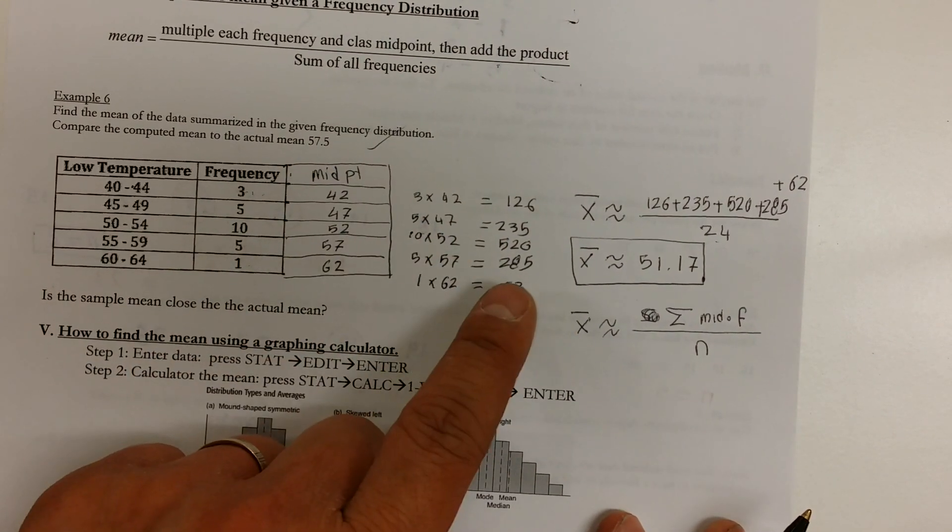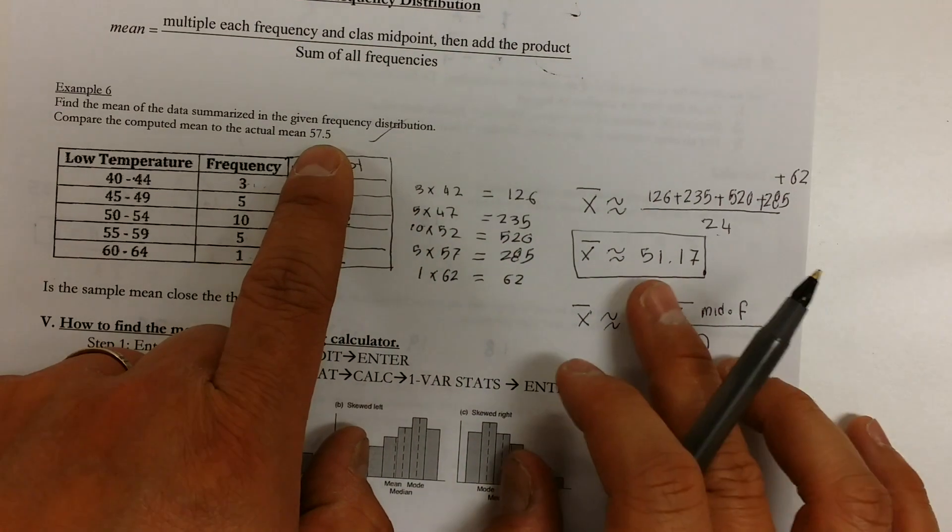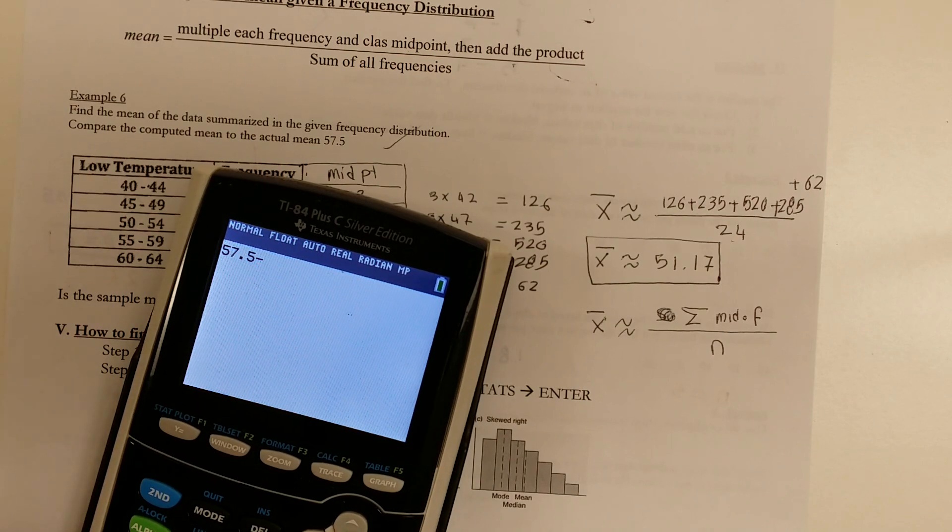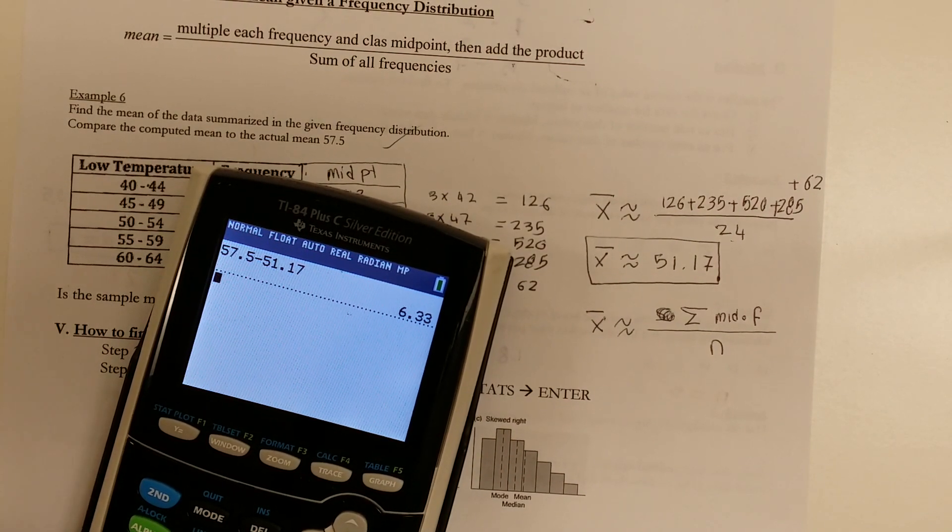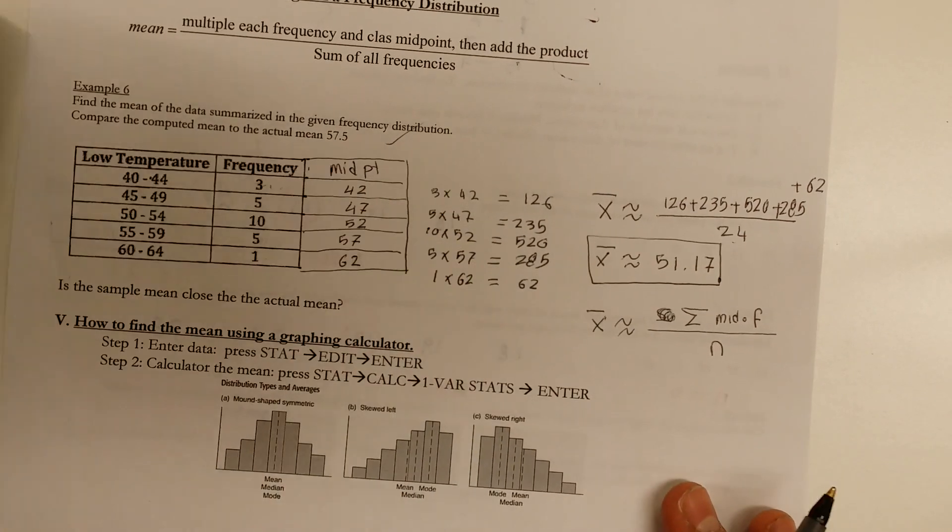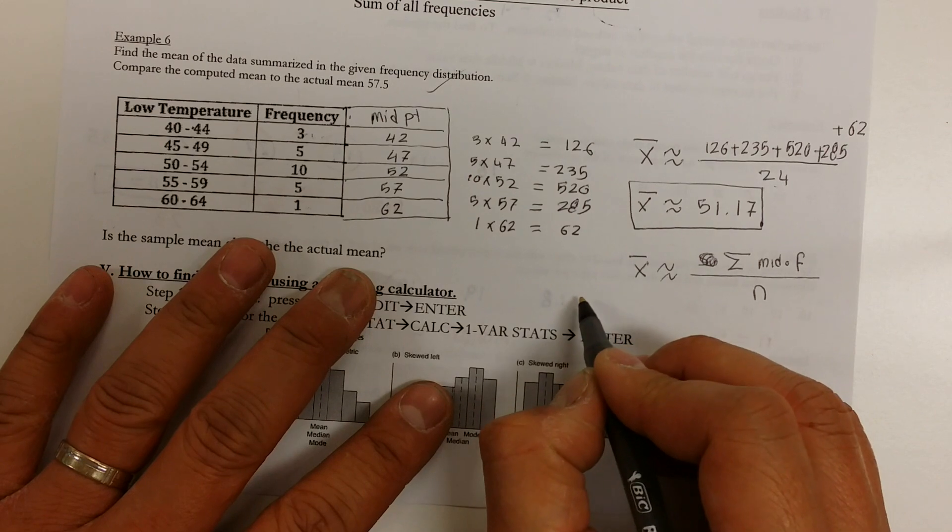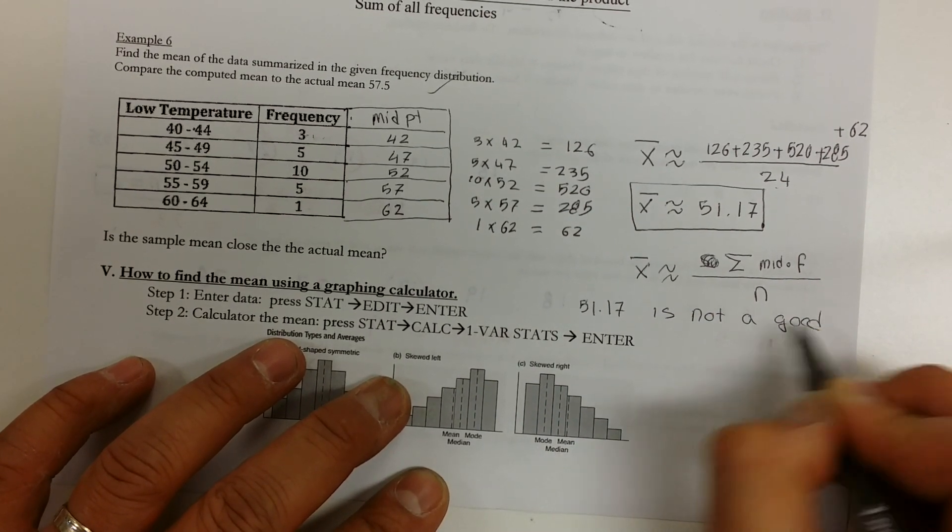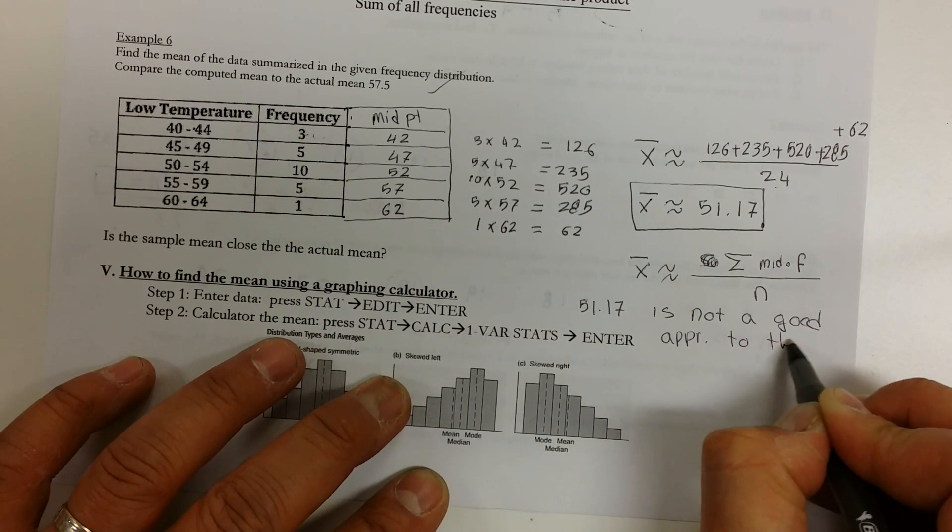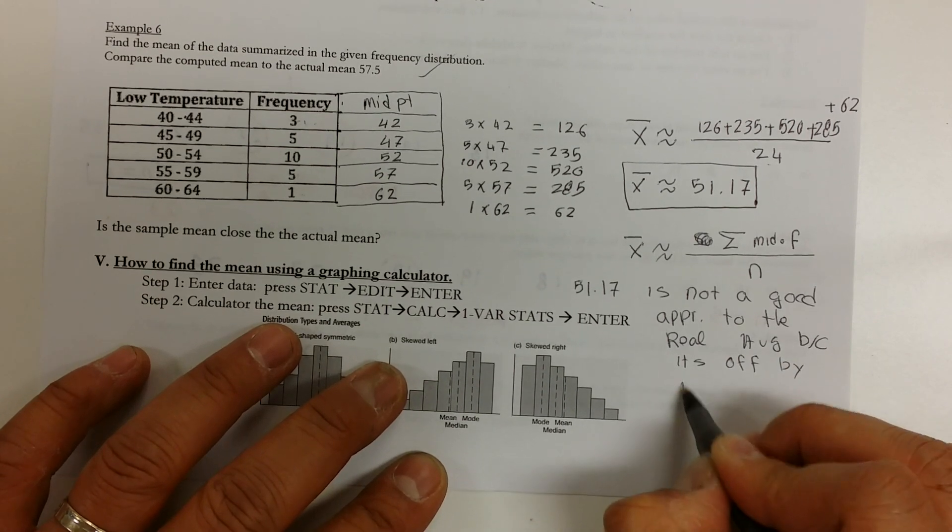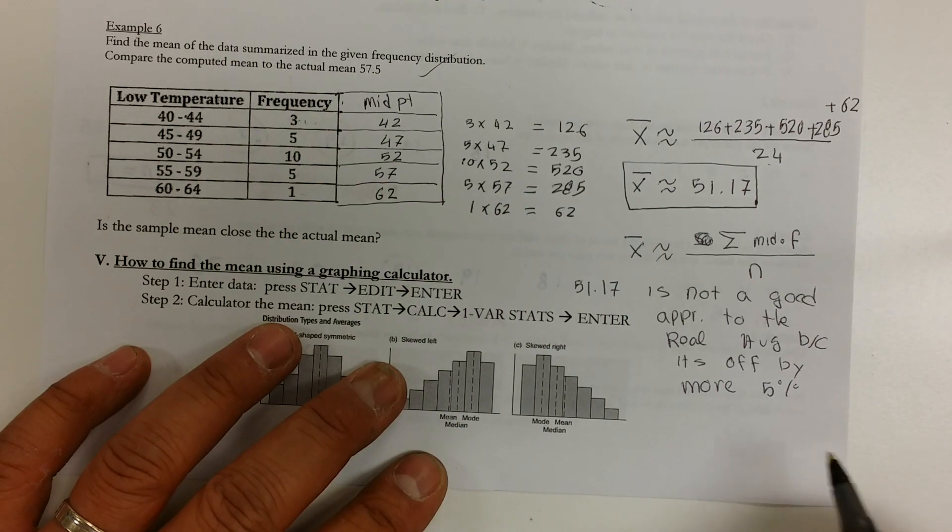So let me write that down in symbol. The mean can be approximated by taking the sum of the midpoint times the frequency divided by n. Remember that n stands for the total data values. So that's how we approximate the average. Now, don't let that confuse you. But I'm sure it will get a bit confusing. And if it does, watch this part again and see what we're trying to do. And see what it says. It says compare this mean that you found to the real mean. If you look carefully, we're off by about, let's see, from 57, 57.5 to 51.17. We're off by 6.33. And if you take 6.33 and turn it into a percent, you can kind of see that we're off by 11%. Off by 11% is a lot. So I would say that 57.17 is not a good approximation to the real average because it's off by more than 5%. So anything that's off by more than 5% is not a good average.